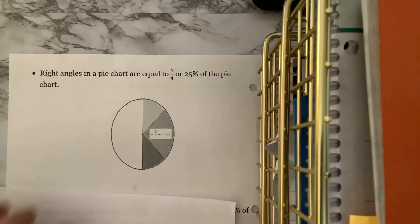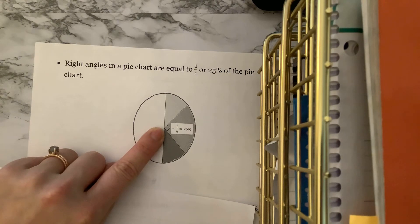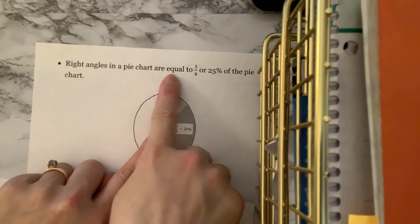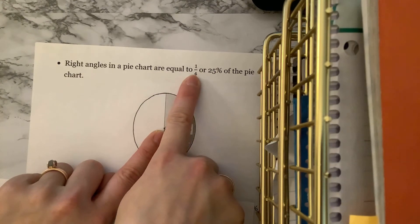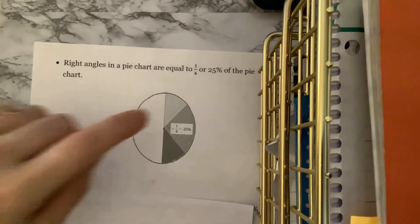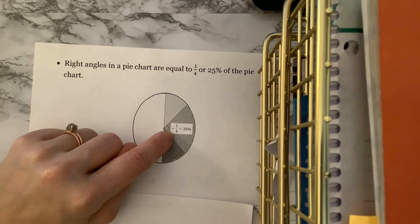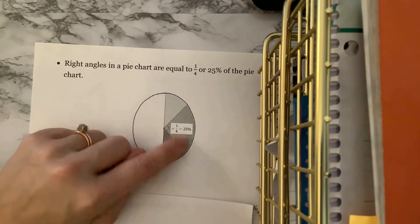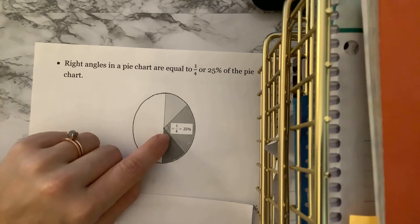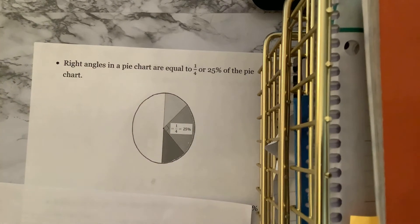Right angles — sometimes we're going to see right angles in a pie chart, indicated by that little square symbol. Right angles in a pie chart are equal to one-fourth, or 25% of the pie chart. So a section with that right angle symbol tells us it's equal to one-fourth, or 25%. If we divided the pie into fourths, all sections would be right angles.